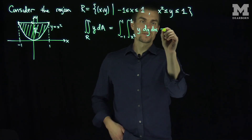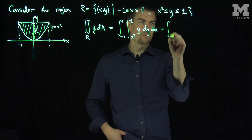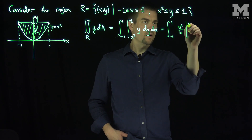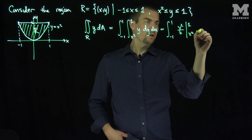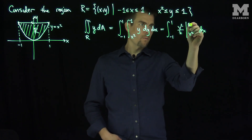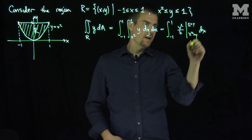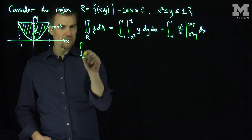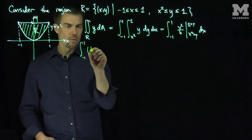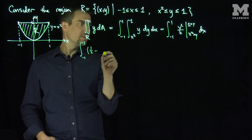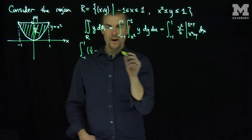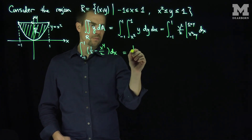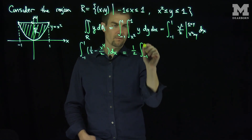We can compute this. This is equal to the integral from negative 1 to 1 of y squared over 2, evaluated from 1 down to x squared, dx. Remember, these are values of y. So this equals the integral from negative 1 to 1. When I plug in y equals 1, I get one-half minus x squared squared, so I'll have x to the 4th over 2, dx.